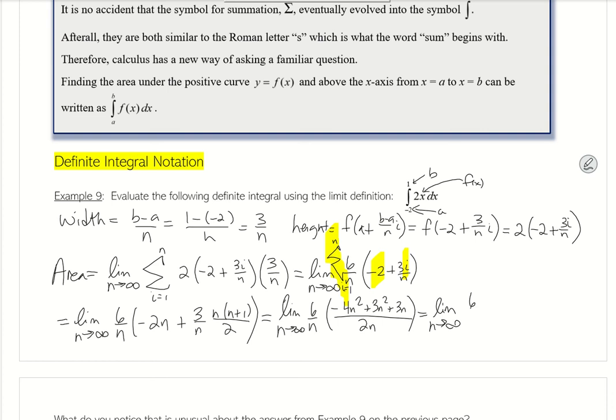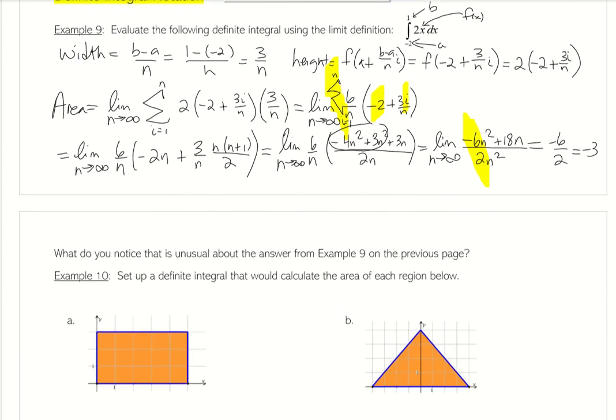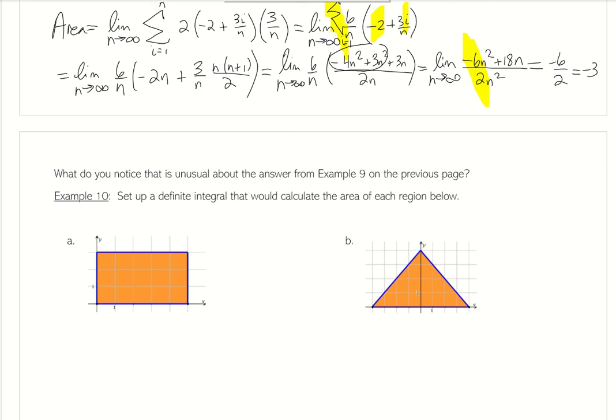And then that will be the limit as n goes to infinity. I'm going to combine these right here. So if I multiply, negative 4n squared plus 3n is negative n squared times 6 is negative 6n squared, and then plus 18n, which we really don't care about, and then it's over 2n squared. You can see that the limit is going to be negative 6 divided by 2, which is negative 3. So that's unusual. We get a negative area. So what does that mean?